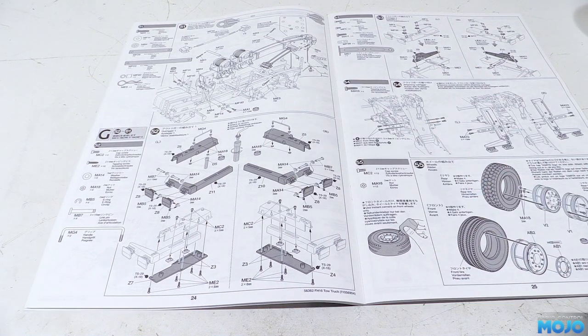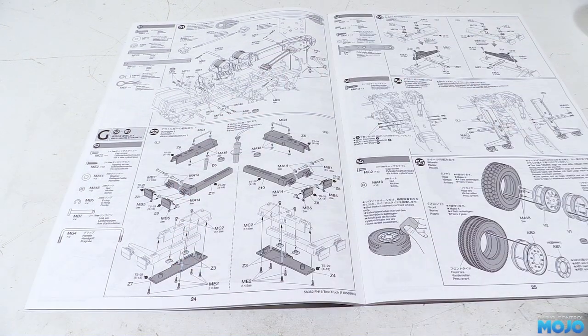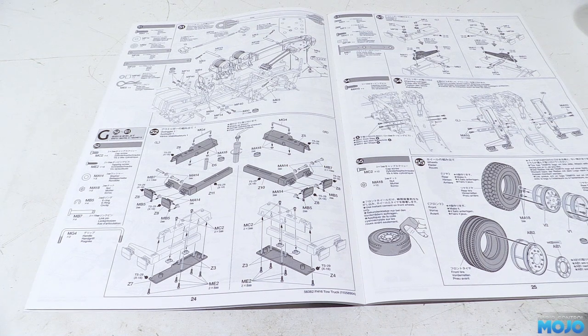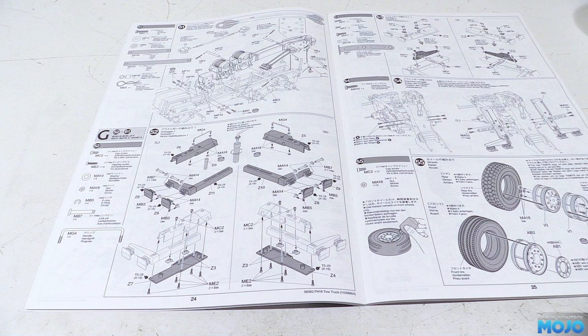Right, we're at step 52, which has a fair bit going on, although the two assemblies are just a mirror image of each other, so we'll just concentrate on one of them as usual.